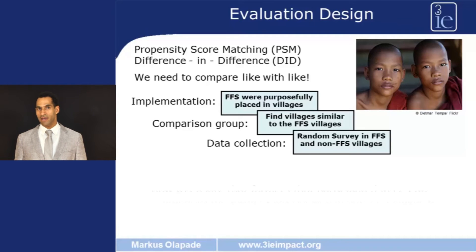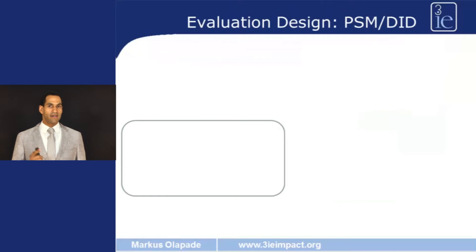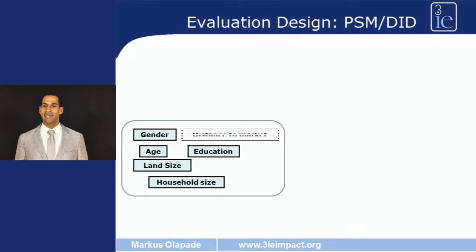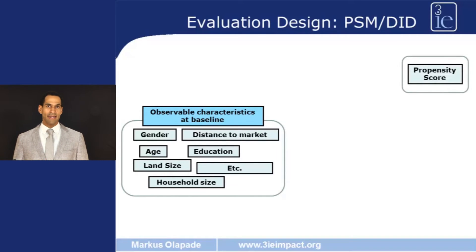From this survey we can identify the average farmer in the comparison villages. But obviously when we compare the average farmer in the comparison villages to the self-selected farmer in the treatment villages, we are not comparing like with like. This is where propensity score matching comes in handy. From the random survey we observe information such as gender, age, household size, education, land size, distance to the next market, and other variables that could be important for the decision to participate in a farmer field school. All these variables are observed at baseline.